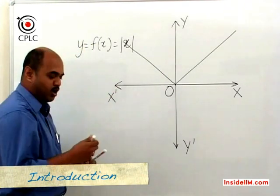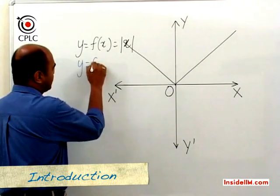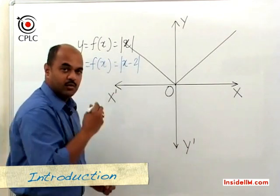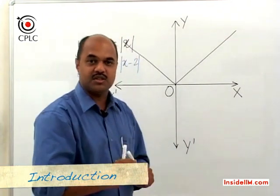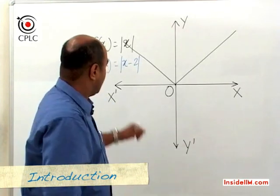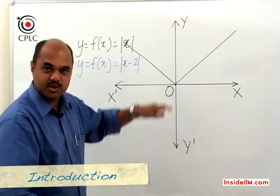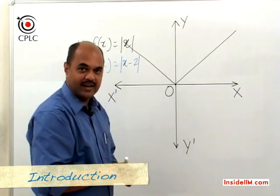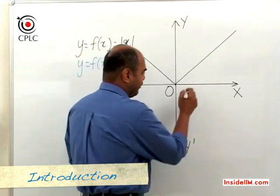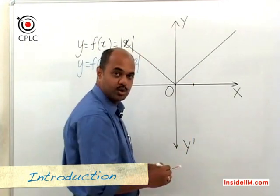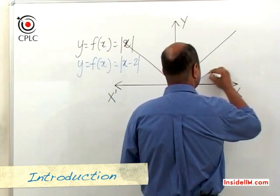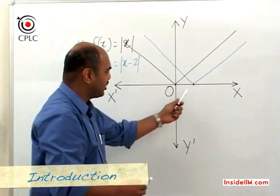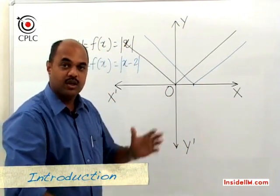Now instead of |x|, if we say y = f(x) = |x - 2|: when we had |x|, it meant distance from the origin, but |x - 2| is the distance from x = 2. Hence the graph will now originate from the point x = 2 and will be similar to what we drew earlier, except the base point of the graph is at x = 2.